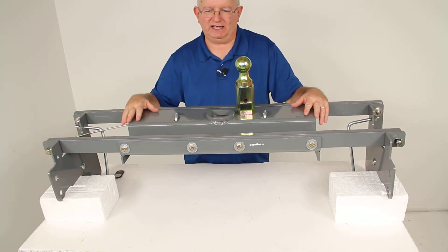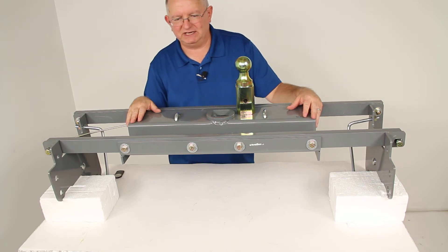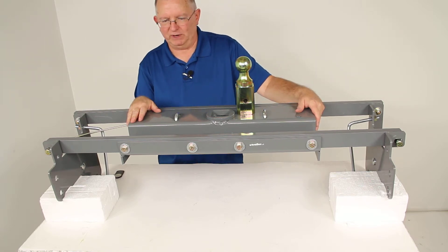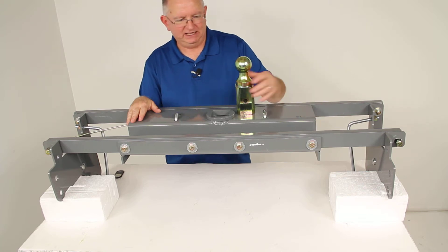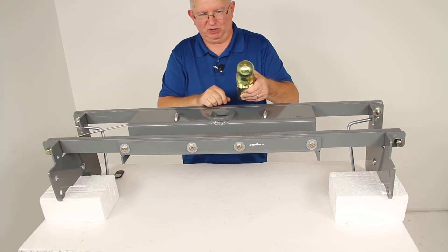The gross towing weight capacity of this gooseneck hitch is 30,000 pounds. The vertical load limit or pin weight is 7,500 pounds. The ball size it uses is a 2-5/16 inch ball size.